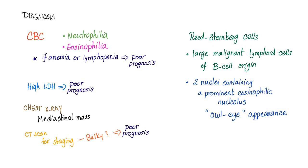The Reed-Sternberg cell: they are large malignant lymphoid cells of B-cell origin. They have two nuclei, each containing a prominent eosinophilic nucleolus, giving the specific owl-eye appearance.